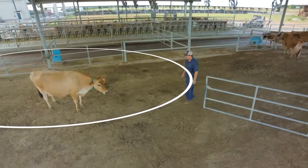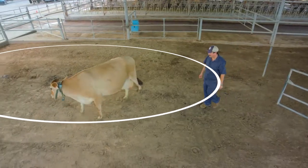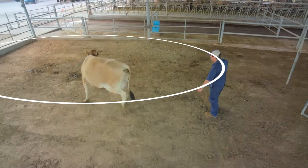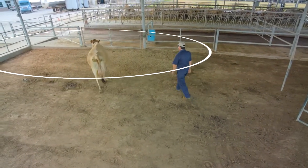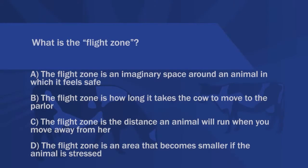If a person enters the animal's flight zone from the front, the animal tends to want to turn around and move away to restore the flight zone. The flight zone is an imaginary space around an animal in which it feels safe.